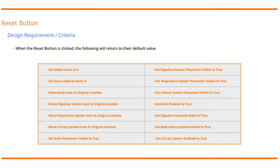We'll need to make all of our placements visible again, since we've set them to false, which means they disappear. We'll take the brain, digestive system, respiratory system, and urinary system placements and turn their visibility to true. The last thing we need to do is re-enable our organ systems, since in our touch-up behaviors we set those organ systems to be disabled — meaning they can no longer move. Hitting reset will allow them to be dragged about the screen again.